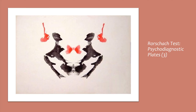Card three is typically perceived to contain two humans involved in some interaction, and may provide information about how the subject relates with other people. Specifically, response latency may reveal struggling social interactions. The most popular response was two human figures — over 70% focused on the gray aspects of the plate.